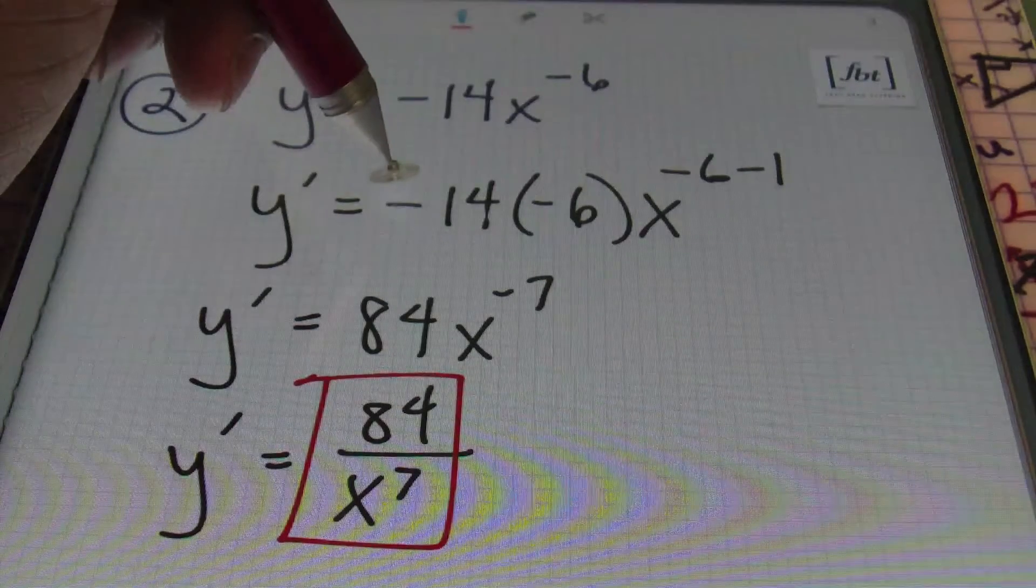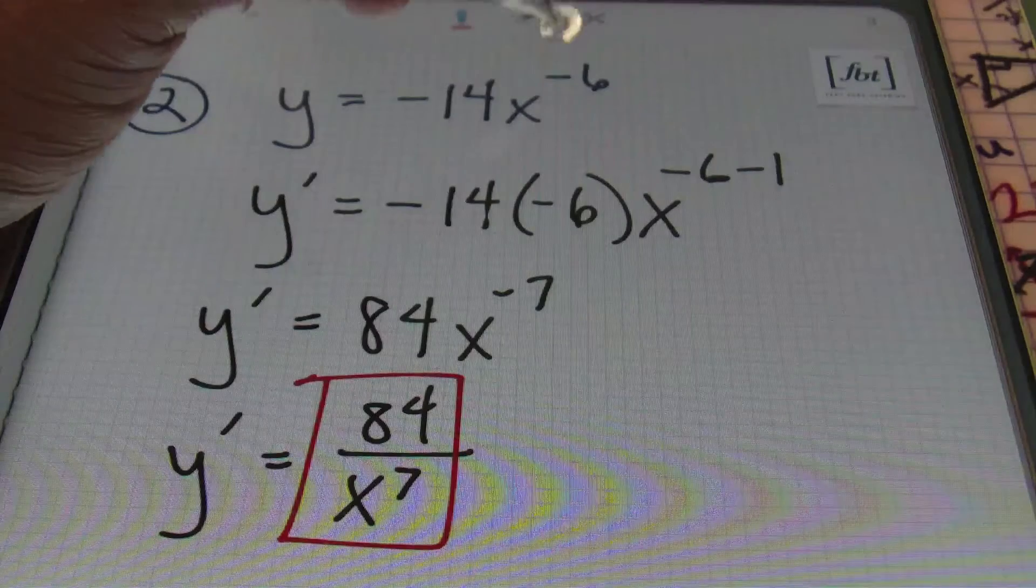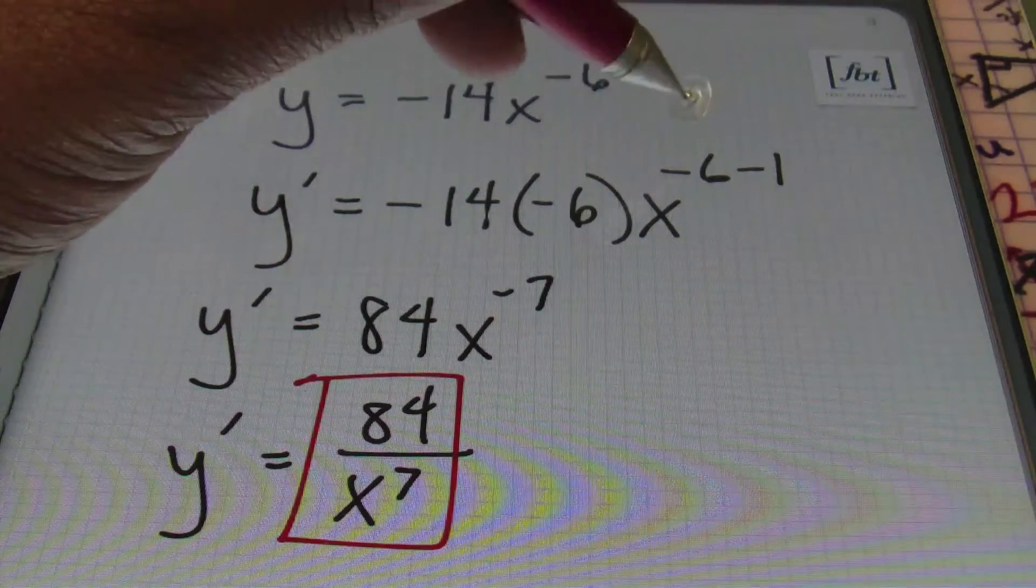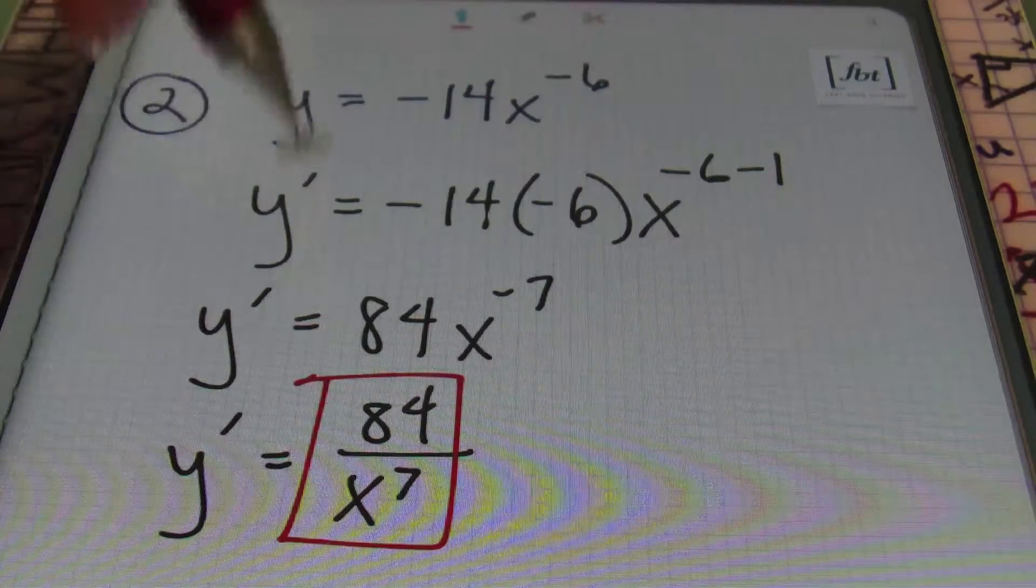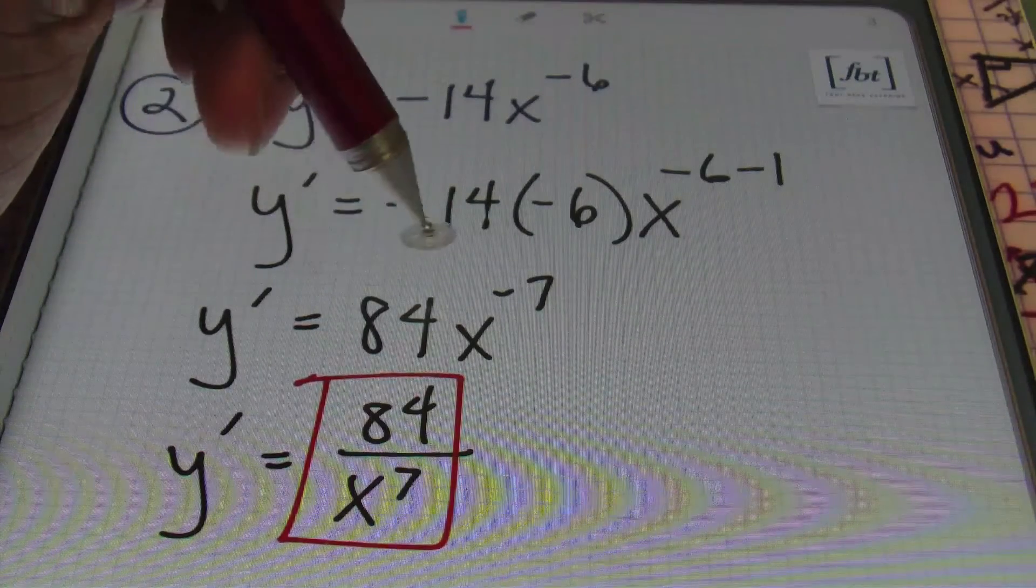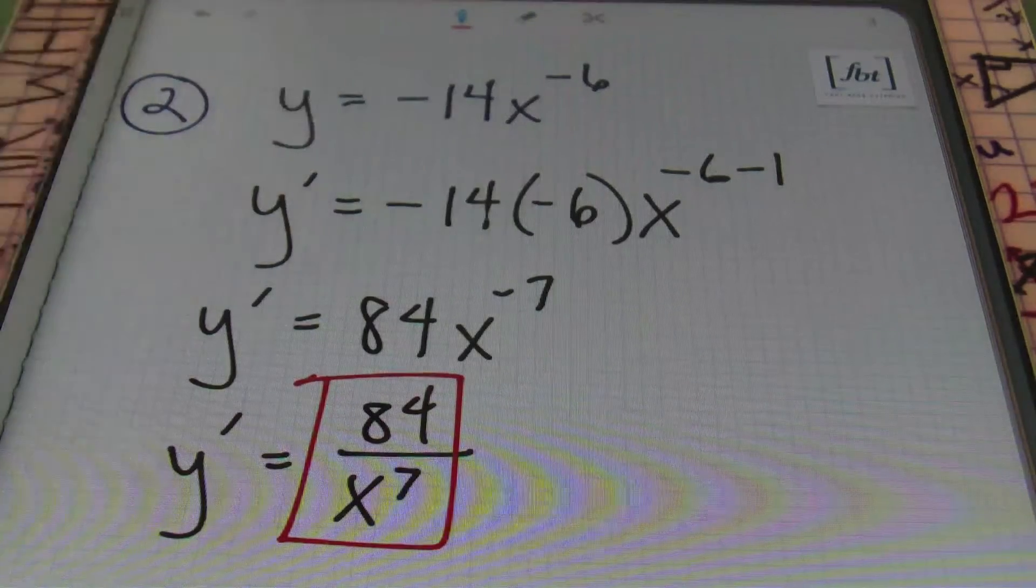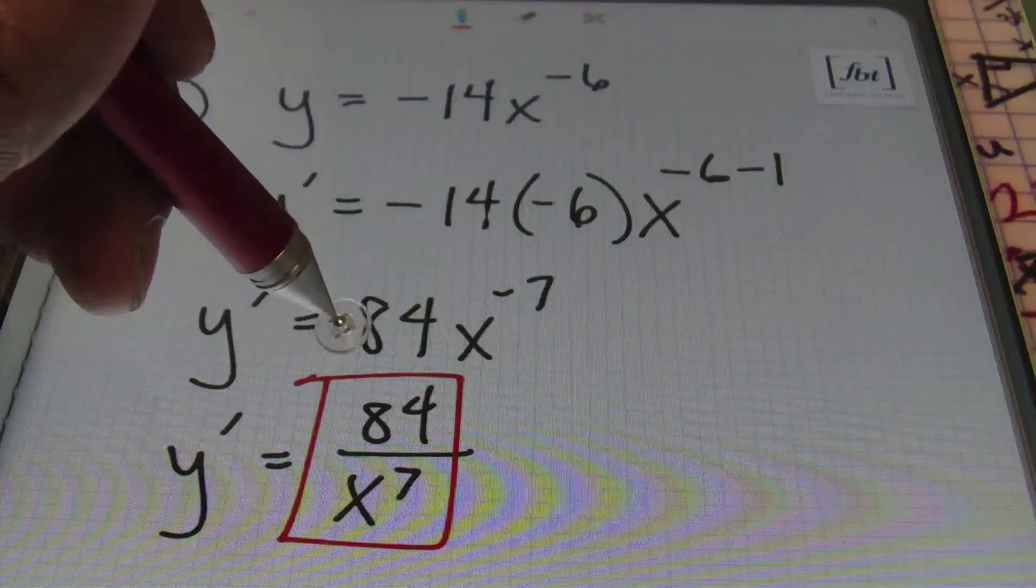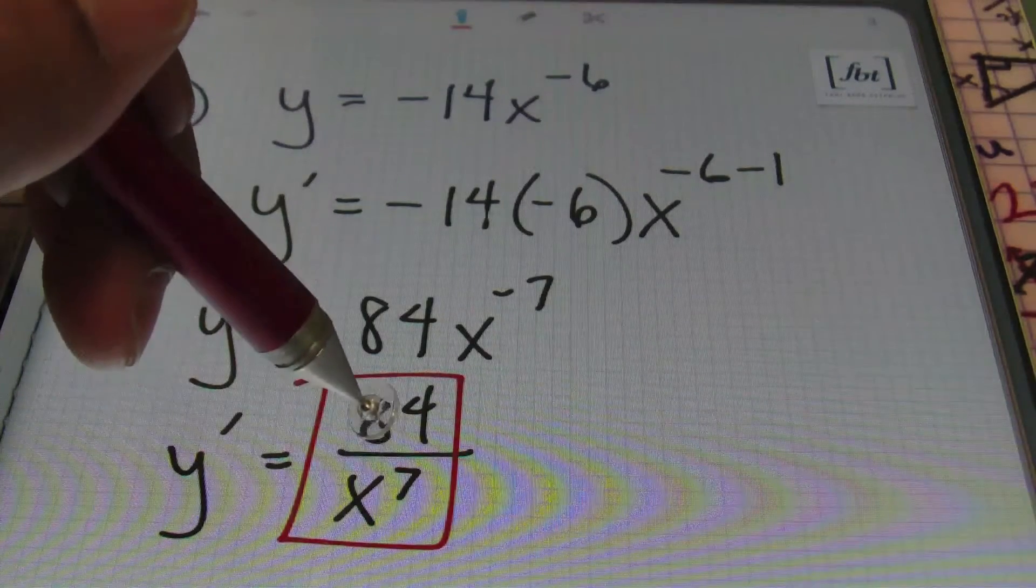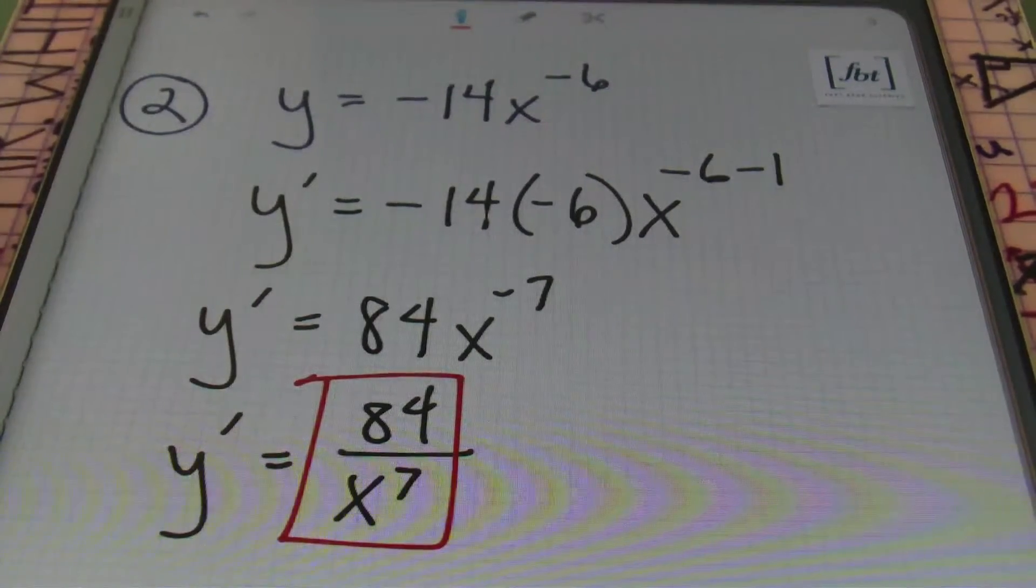So my first step was to bring down my coefficient negative 14, then when applying the power rule to that, my exponent of negative 6 comes down and multiplies with that coefficient, times my variable, raised to the original exponent, minus 1. When multiplying this together, the product of negative 14 and negative 6 gives me 84, and when combining negative 6 and negative 1, I'll end up with x to the negative 7th power. And in order to make sure that you're not writing your answer with a negative exponent, that base of x comes into the denominator, which will change your sign on your exponent and make it a positive. So your answer is 84 divided by x to the 7th power, and that's problem number 2.